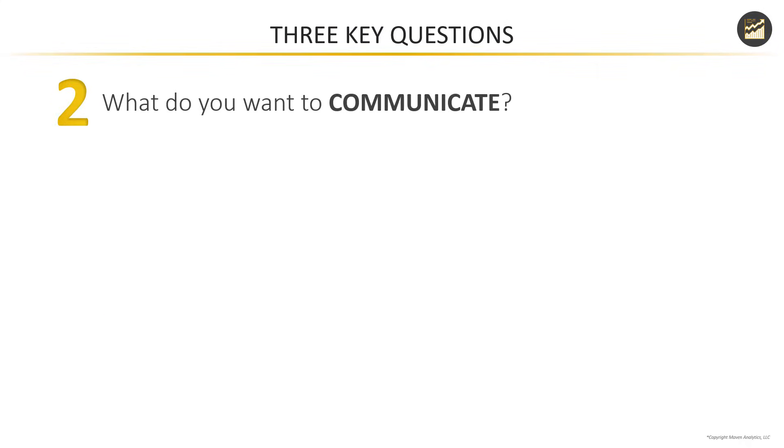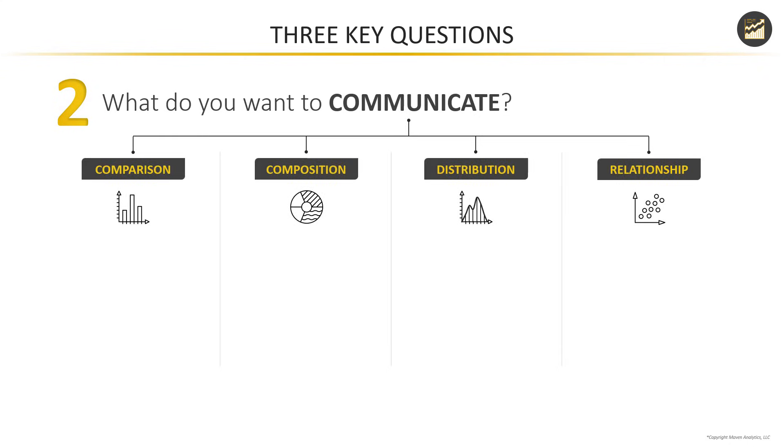Question two is all about what you're trying to communicate. Let's break this down into four different categories: comparison, composition, distribution, or relationship. A comparison is when you're trying to compare values either over time or across different categories. The common visuals you'll use are things like basic column and bar charts, clustered columns, data tables, heat maps. If you're using time series data, line charts or area charts, and sometimes more specialized visuals like radar charts.